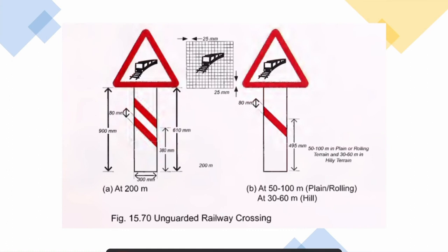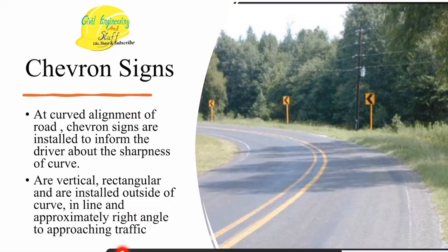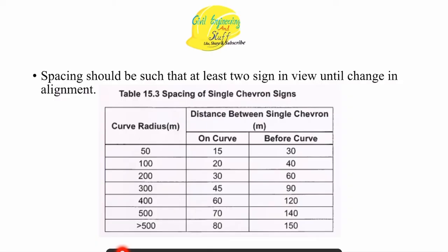Examples of warning signs include unguarded railway crossings where there is no provision for restricting traffic. Another example of a warning sign is the chevron sign. These are located along the curve of the road — whenever there is a sharp curve, we have chevron signs. These are rectangular in shape with black markings on a yellow background, just for improving visibility.